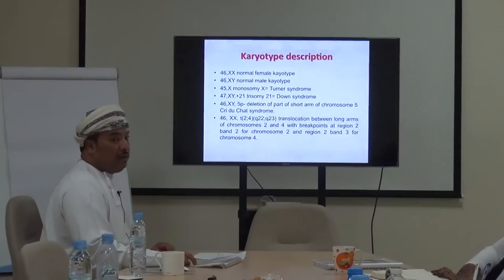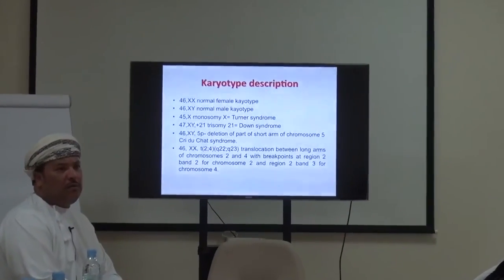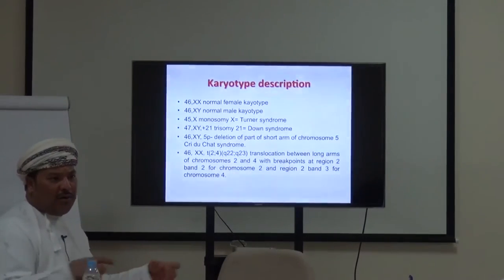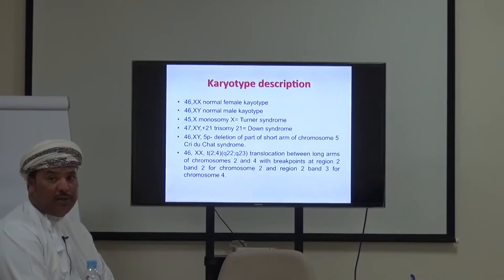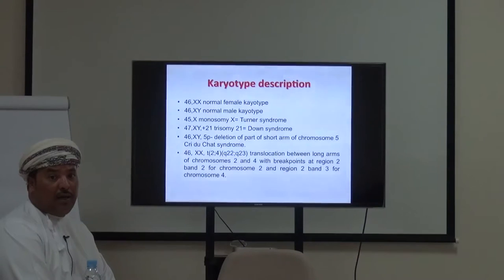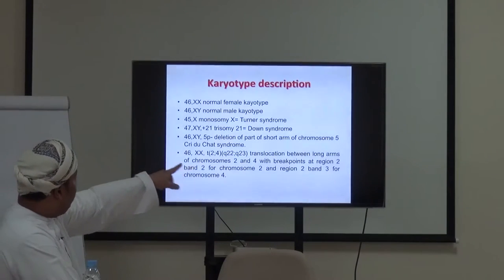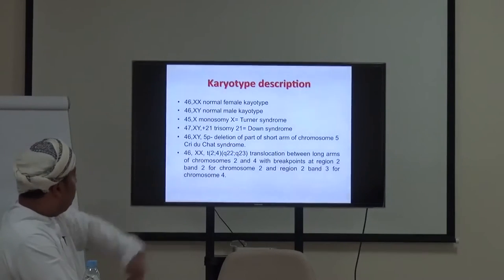This is how we read karyotype descriptions: normal female is 46,XX; normal male is 46,XY; Turner syndrome is 45,X; trisomy is written with the chromosome number. For 46,XY del(5p) — deletion of the short arm of chromosome 5 — this is Cri-du-chat syndrome, which is famous for that deletion. For translocation notation: 46,XX t(2;4)(q22;q34) means a translocation between the long arm of chromosome 2 at region q22 and the long arm of chromosome 4 at region q34.